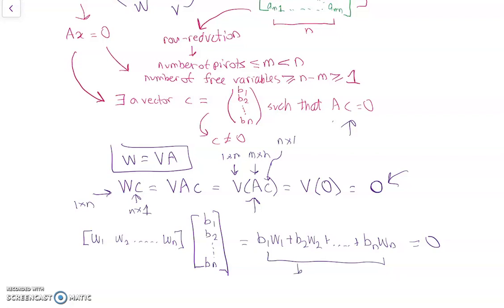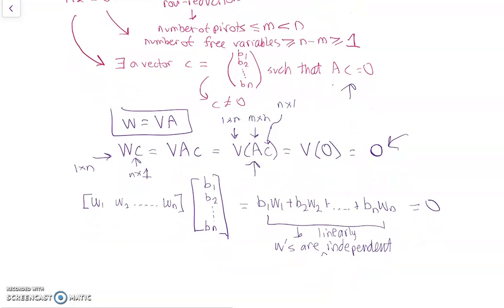But since the W's are linearly independent, W's are linearly independent because the W's are a basis, which means all the B's have to be 0. So the entire vector C must be all 0s. However, this is a contradiction, because from earlier, we proved that there exists a C that's not 0. And this C will, all the B's will satisfy its linear combination being 0. That gives us a contradiction.